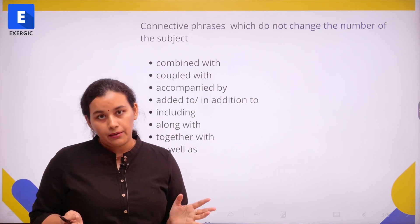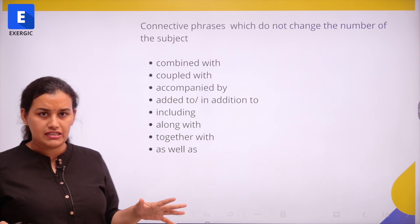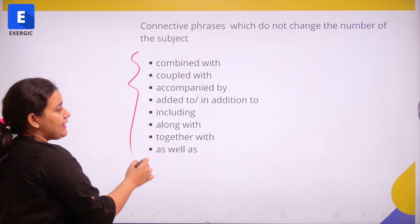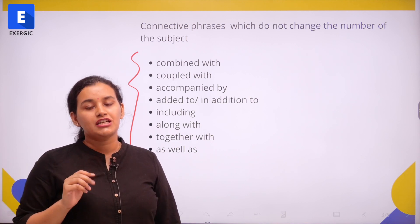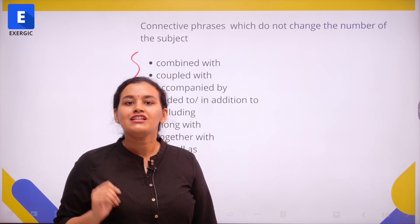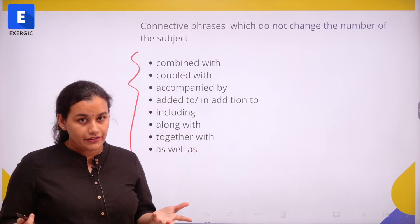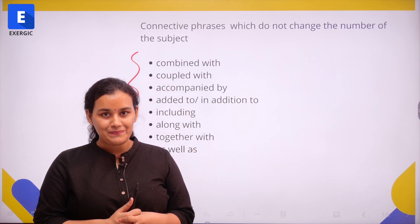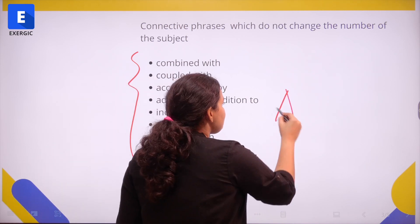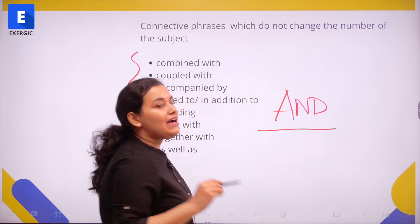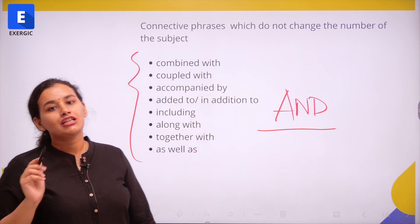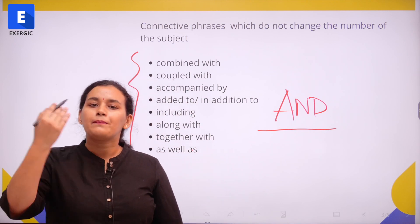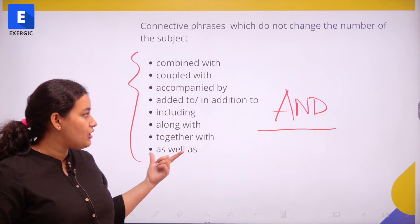If in your examination you find any connective phrase starting with combined with, coupled with, in addition to, or any of these — they are all additive connective phrases and they will not change the number of the subject. But can you think of a connective word or conjunction which is going to change the number of the subject in the sentence? The word is "and." And is a connective word which is going to change the number of the subject and therefore change the verb.